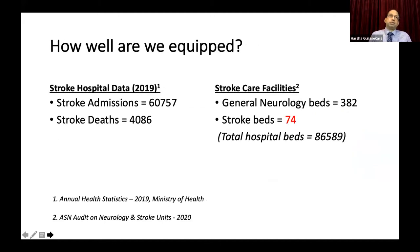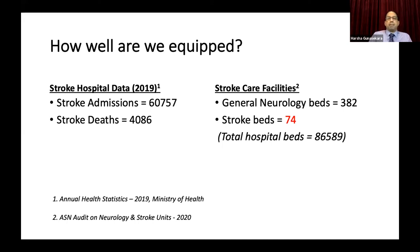Looking at how well we are equipped — from the 2019 annual health statistics — we had about 60,000 admissions to state hospitals with stroke. However, we have only 382 general neurology beds and only 74 stroke beds from a total of about 86,000 state sector hospital beds. We need further improvements, particularly challenging at a time when resources are committed to combating the pandemic.